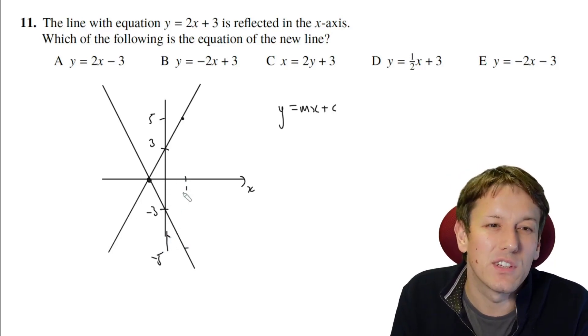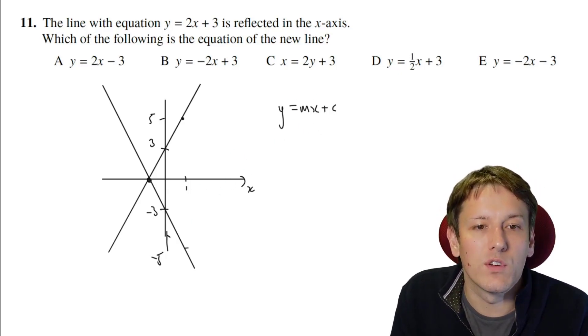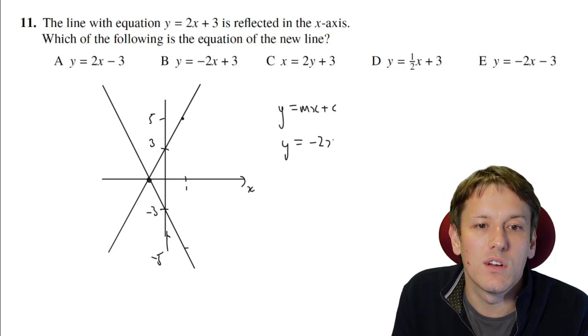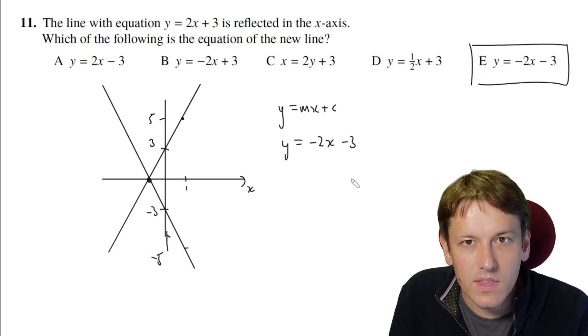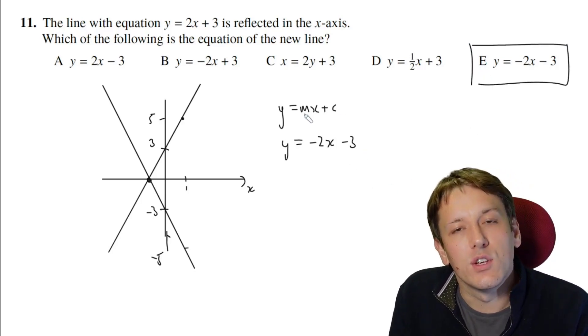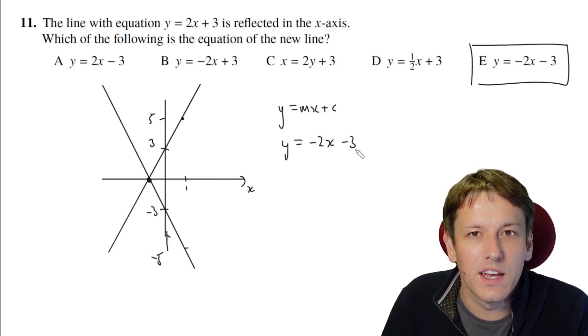So using this same form, we've got a gradient of minus 2, and the y-intercept is minus 3, so we get y equals minus 2x minus 3. And so you do just need to know the form of the straight lines here, which is something we will look at in the full course as well, go for gold in the intermediate maths challenge.